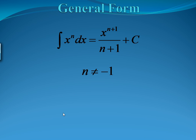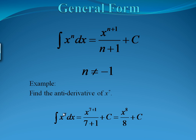So the general form looks like this: the integral of x to the n dx is x to the n plus 1 divided by n plus 1, plus some constant c. Notice that n cannot equal negative 1 — that's a special case we'll address later. For example, to find the antiderivative of x to the 7th, we add 1 to the power and divide by the new power, then add our constant c. That gives us x to the 8th over 8 plus c.